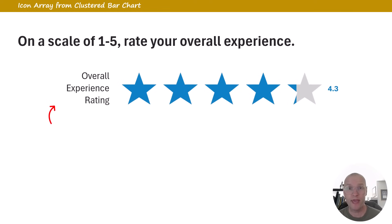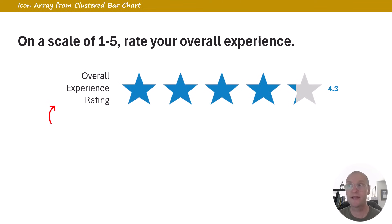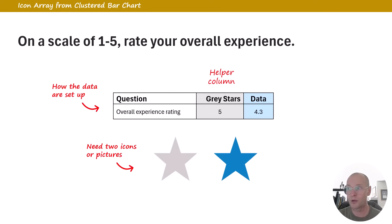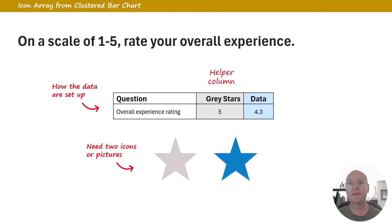Another thing you might want to make are icon arrays — for example, visualizing a scale, an overall experience rating, or a five-star rating. We're going to make this in the exact same way from a paired bar chart. Your data needs to include a helper column set to your maximum rating — in our case, five. You also need two duplicate icons you can color: one gray for the background bar, and one in your data color.